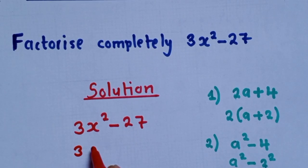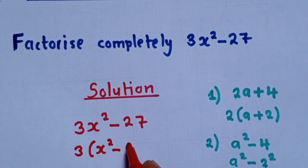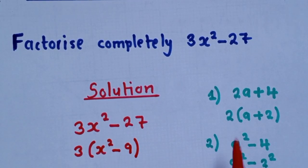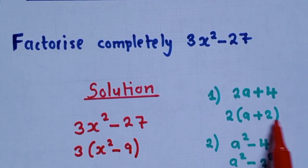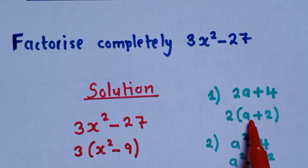So we're going to write 3 outside. And then we remain with x power 2. And then we say, 3 into negative 27, it's negative 9. Hopefully, you've seen that this idea has been applied. This idea right here.